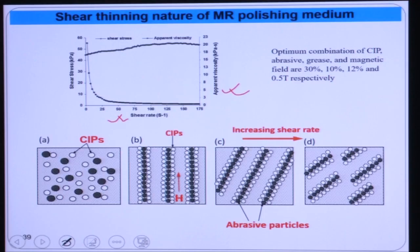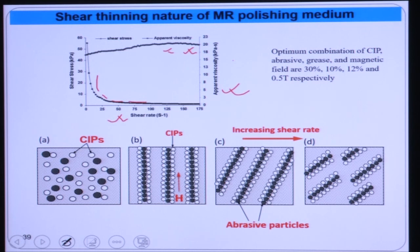From the shear rate vs. viscosity plot, as the shear rate of the fluid increases, the viscosity reduces drastically, confirming that this MR polishing fluid is a shear thinning fluid. Similarly, from the shear stress profile, the gradient reduces with increasing shear rate. This is because with increasing shear, the chain structure breaks and has little time to recombine, so MR fluid behaves as a shear thinning fluid.